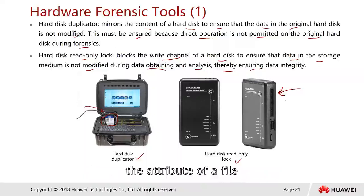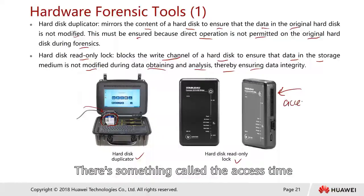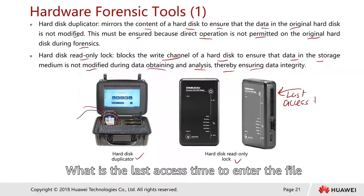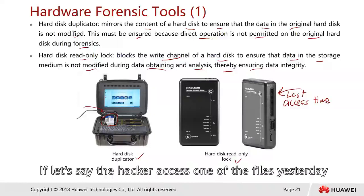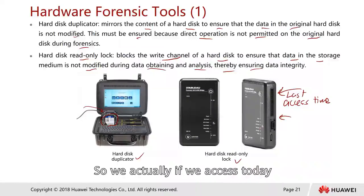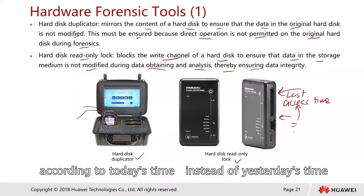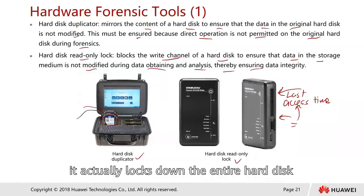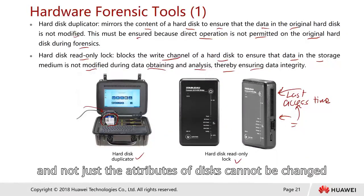One very important thing is the file attribute called the access time — the last access time to a file. If the hacker accessed a file yesterday, and today we try to read it to see its contents, the last access time might change to today's time instead of yesterday's. With the hard disk read-only locker, it locks down the entire hard disk so that not even file attributes can be changed.